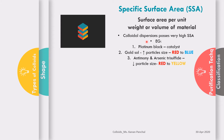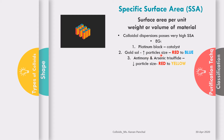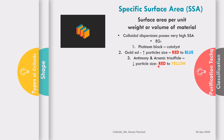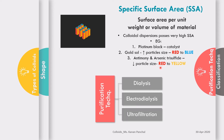Colloidal dispersions possess very high specific surface area. For example, platinum itself cannot be used as a catalyst, but in its colloidal form — known as platinum black — it enables catalysis. As gold salt increases in particle size, the color of the colloidal system changes from red to blue. Antimony and arsenic trisulfide change color from red to yellow as they transition from coarse to colloidal size range. Colloidal systems have specific purification techniques: dialysis, electrodialysis, and ultrafiltration.